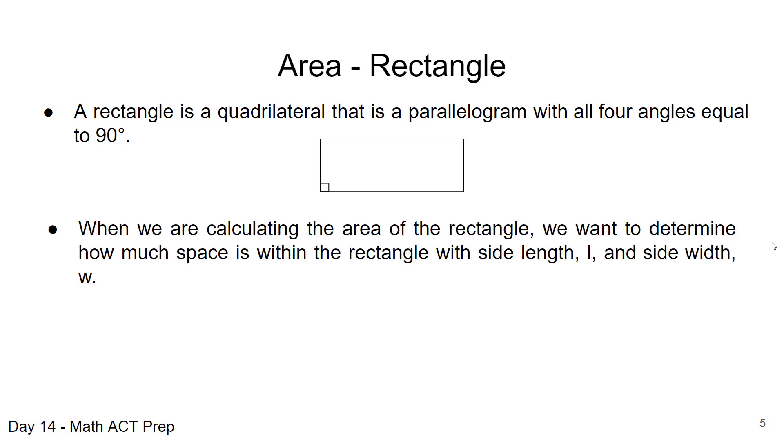When we're looking at the area of a rectangle, we want to determine how much space is within that rectangle. We're given a side length L and a side width W. So we're going to use the formula area of a rectangle equals length times width, L times W.